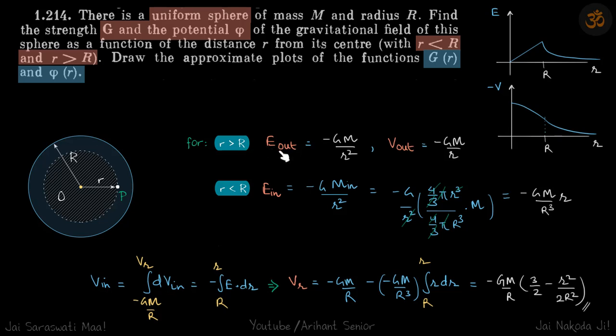E is given as minus GM by r squared, which is same as the field due to a point charge. So potential outside is also going to be similar to that of the potential due to a point charge, so that will be minus GM by r.